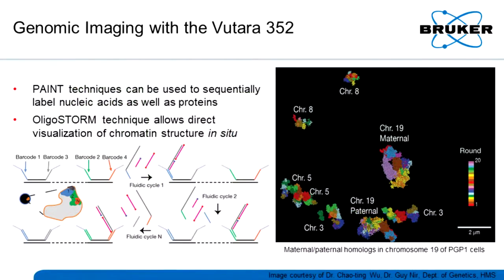Another collaboration we have is using a similar technique called OligoSTORM, working with Ting Wu's lab at Harvard to do multiplex imaging of multiple probes in the genome — essentially multiplex FISH. The idea is the same: you have barcoded probes to paint the chromosomes. You label the chromosomes with different barcodes using this FISH technique, then sequentially label each portion of the chromosome. In their experiment they labeled 20 different portions, sequentially washed in and imaged probe one, then washed out, imaged probe two, and repeated this 20 times to build up a 3D structure of the chromosome in space.